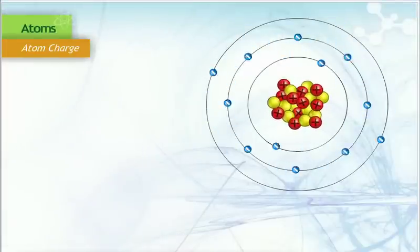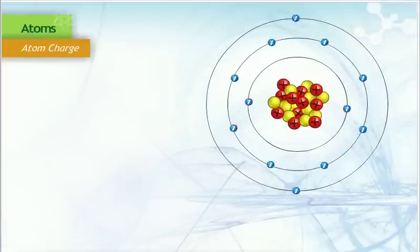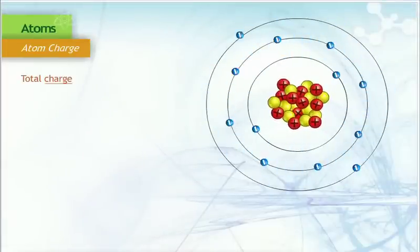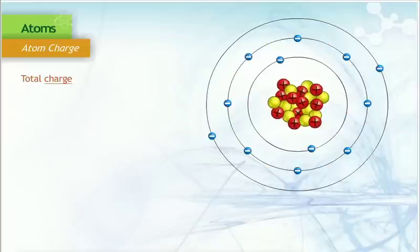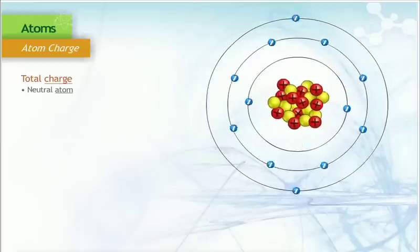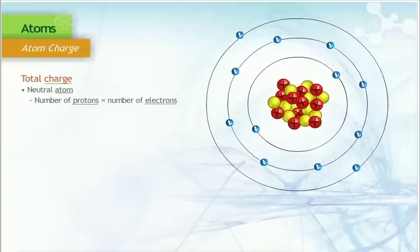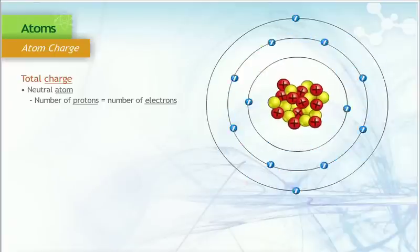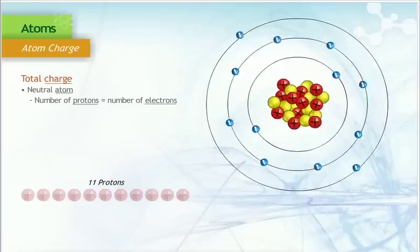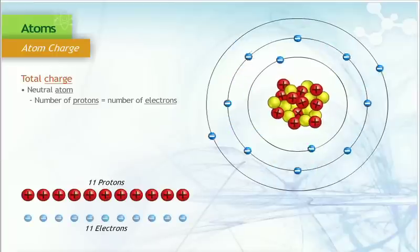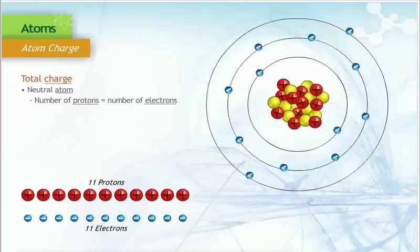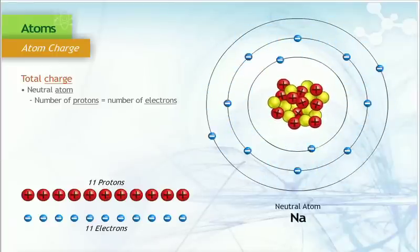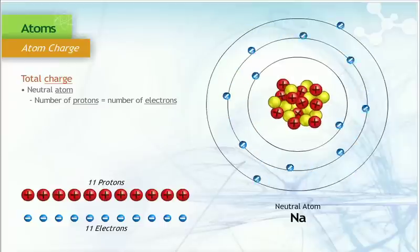We know that the particles of atoms have charges. Atoms also have a total charge of neutral, positive, or negative. Neutral atoms have the same number of protons and electrons. For example, a neutral sodium atom has 11 protons and 11 electrons. Neutral atoms are expressed with the element symbol, and no superscript is present.